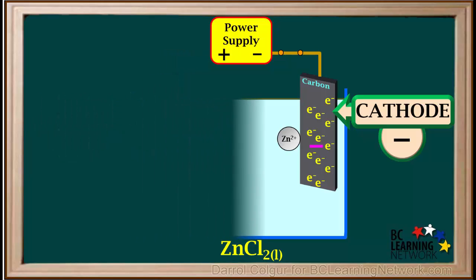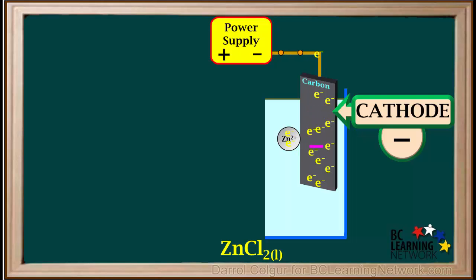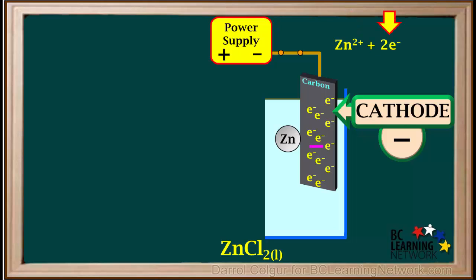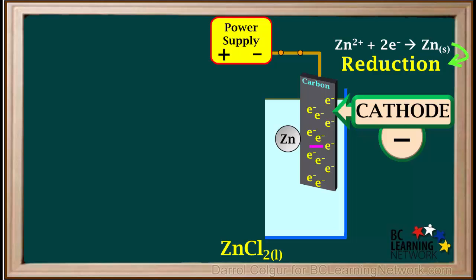Now we'll concentrate on the cathode and see what happens there. The zinc ion will gain two electrons from the cathode and turn into a zinc atom. The equation for what just happened is Zn2+ plus two electrons gives Zn solid. This is an example of reduction, so we see that reduction of the cation Zn2+ occurs at the cathode.